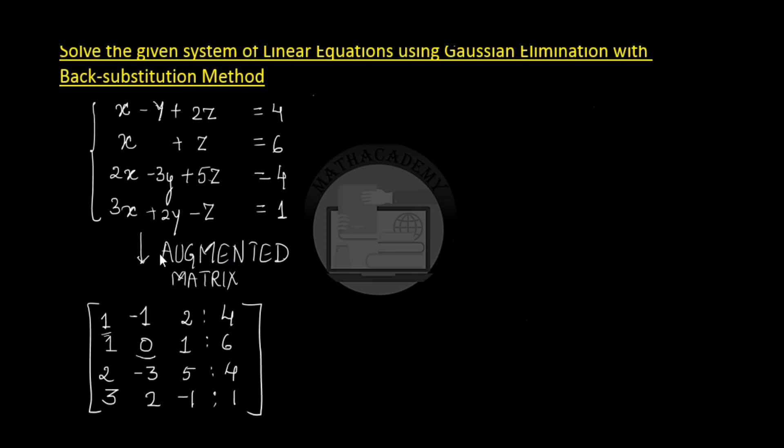The first step is to form an augmented matrix. An augmented matrix is a matrix which consists of the coefficients of the variables and the constant term. So this is our augmented matrix corresponding to the given system of linear equations.